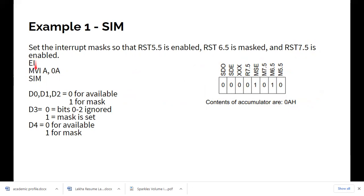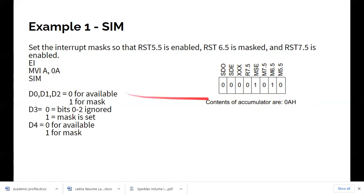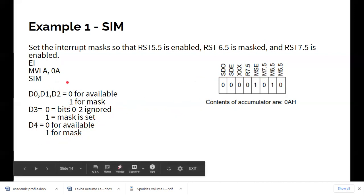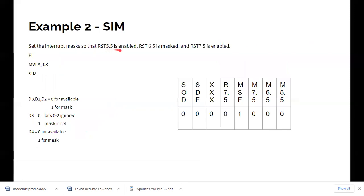Programmatically, first enable the interrupt with EI. Then use MVI A, 0Ah — this places the required value in the accumulator where the zero and A correspond to the bit pattern we need. Then execute the SIM instruction. After this, if RST 5.5 or RST 7.5 occurs, the microprocessor will allow it to take place.